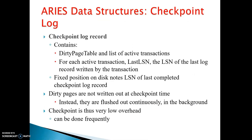The checkpoint log record contains the dirty page table and a list of active transactions — what transactions are currently active and working. For each active transaction, it records the last LSN, which is the LSN of the last log record written by the transaction. A fixed position on disk notes the LSN of the last completed checkpoint log record. Dirty pages are not written out at checkpoint time; instead they are flushed out consistently in the background. Checkpointing is thus very low overhead and can be done frequently.